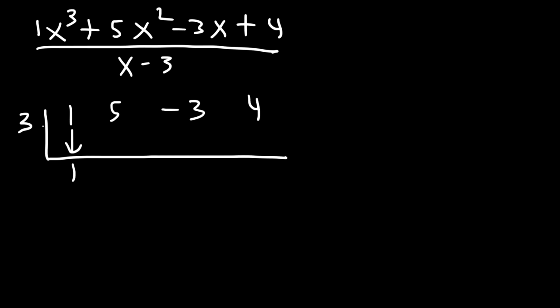So let's bring down the 1. 3 times 1 is 3. And then 5 plus 3 is 8. 3 times 8 is 24. Negative 3 plus 24 is 21. And 3 times 21 is 63. 63 plus 4 is 67. So this time, the remainder is not 0. So I'm going to write that here. We have a remainder of 67.